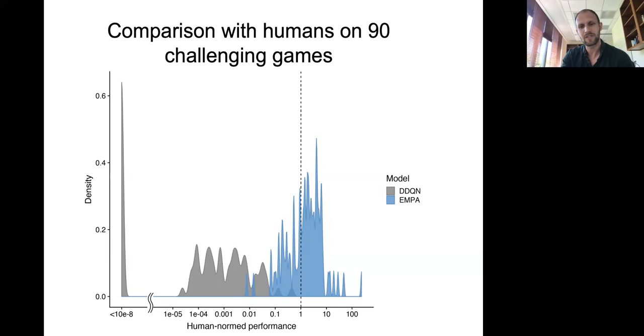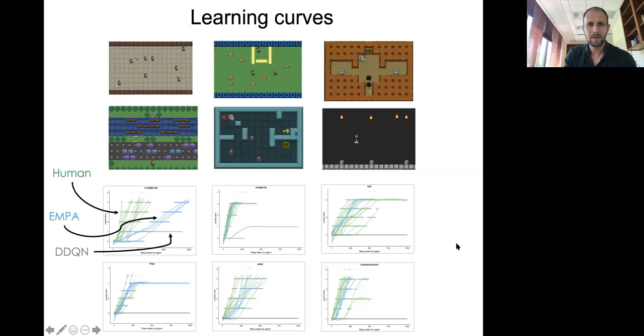We've built 90 different games generated using VGDL and compared it to a variant of the DQN, compared to the DQN. And you can see overall, EMPA is doing much better than DQN and also much closer to what humans are actually doing, which is this dashed line. Here are the learning curves. So you can see that sometimes humans are doing a bit better than EMPA. Sometimes they're about the same. But in every case, the DQN is basically not doing well at all, basically flat for a lot of these learning curves.